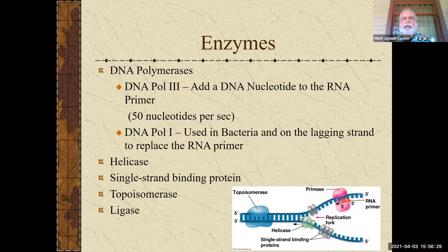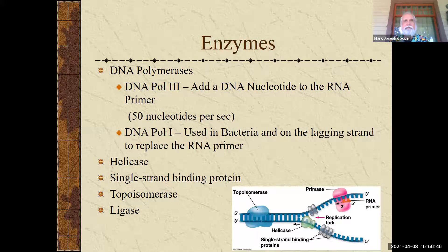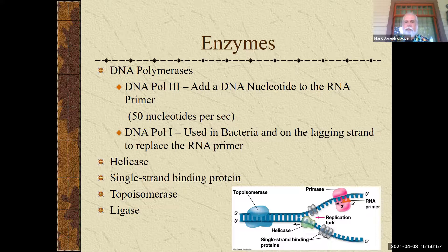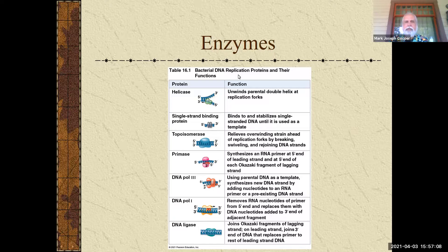The last one is ligase. Ligase comes in and attaches any breaks in the covalent bond. So ligase will fix where topoisomerase went in, and also fix where the primer has been replaced by DNA polymerase I. Once you get the new DNA there, there's a little nick or break, and ligase goes in and rebonds all those different bonds. The Okazaki fragments on the lagging strand also have to be bonded together. So those are your enzymes.